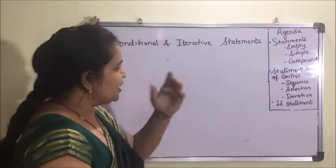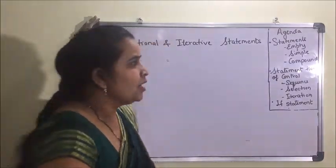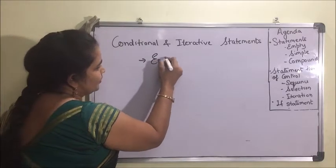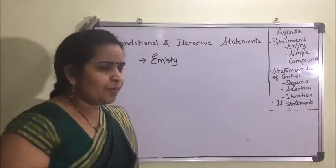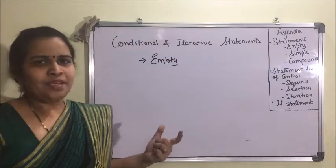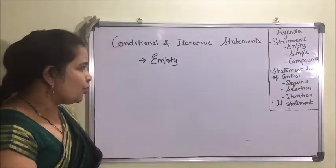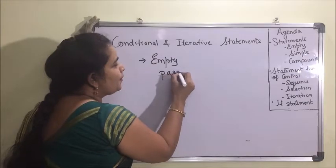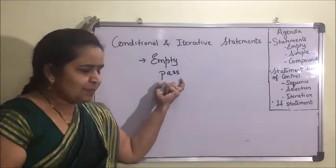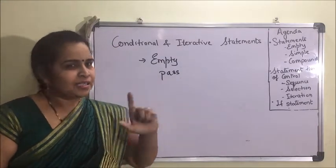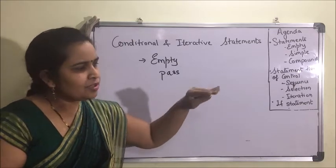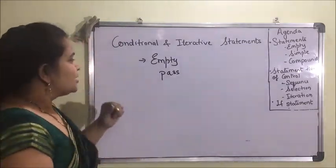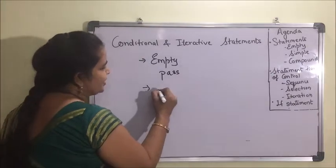Statements are divided into three categories. The first one is the empty statement. As the name indicates, empty means it does not do anything. The only empty statement is 'pass'. When this statement is executed, it doesn't do anything — the control will flow directly to the next line.